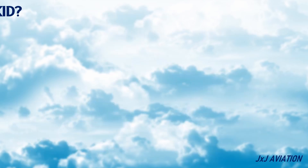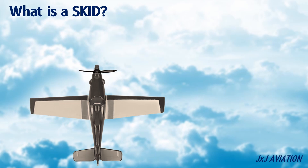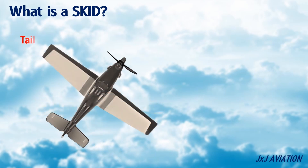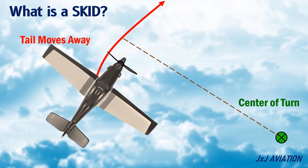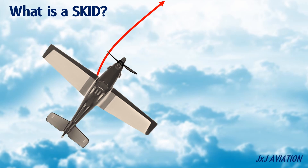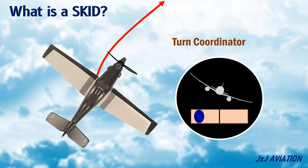Now let's look at what is a skid. A skid can be defined as a condition in which the tail of the aircraft moves away from the center of a turn. This happens because of too much rudder input during a turn along with the aileron input. During a skid, the indication on the turn coordinator will be like this, which means the rudder input has to be reduced.